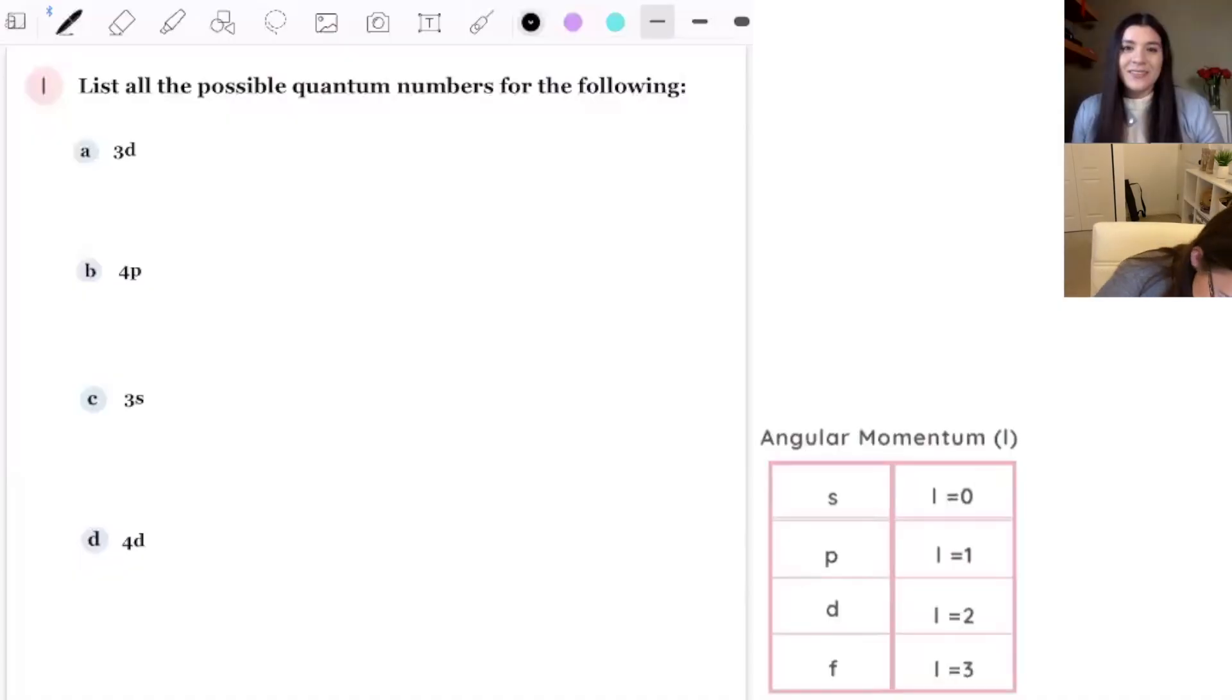These next questions are potential test questions, so try them out first and then we'll go over the answers together. List all the possible quantum numbers. So we start with n and we know that n is 3 because of that, right? Yes.